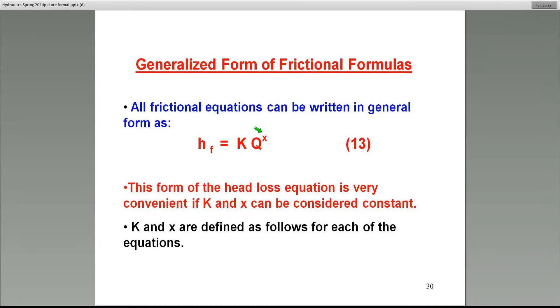One is the typical one that you're probably already familiar with, called the Darcy-Weisbach equation. For that, x is 2. And then the one that's most widely used in water systems is called Hazen-Williams. For that, x is 1.85. So in either case, all units must be consistent. For example, head loss due to friction will be in feet, Q in CFS.